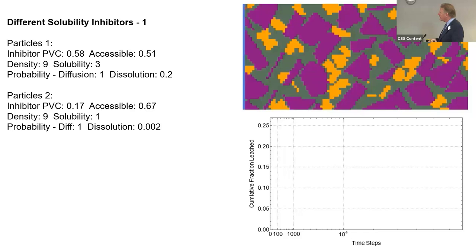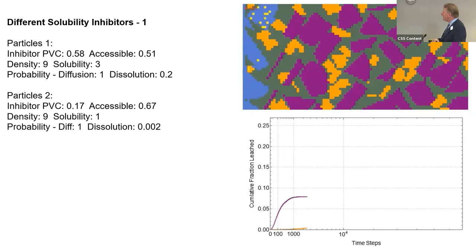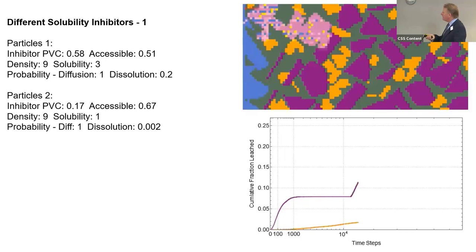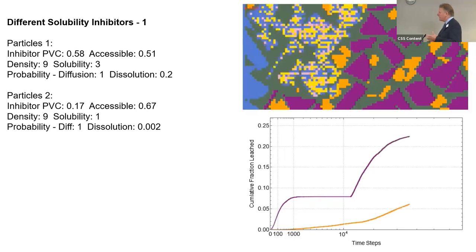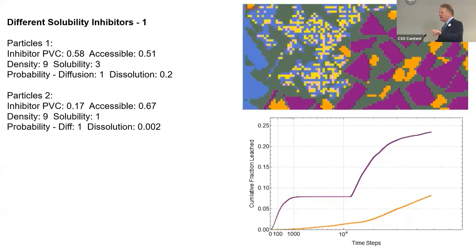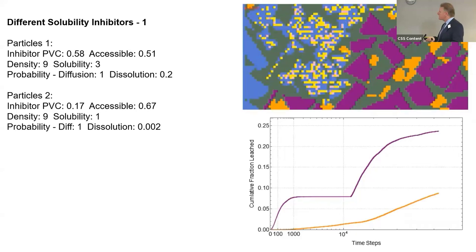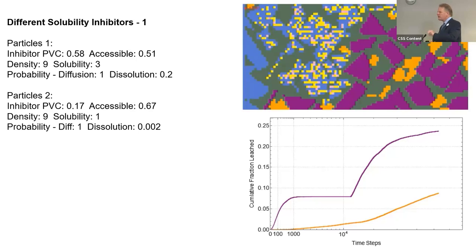Looking at a specific example: here we've got inhibitors of very different levels of solubility. The purple particles are very soluble, so you see very rapid release of that particular particle. But as soon as there's a yellow particle, it's blocking any further release — you get a plateau until that's released. What we see — and what Reza saw in his results — is that in 3D you don't see these plateaus in the same way because it's averaged. But the same principle still applies: you can control the rate of release by not just one species, but the interaction of all the species together.